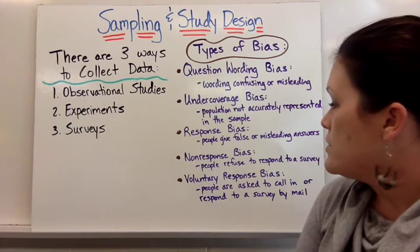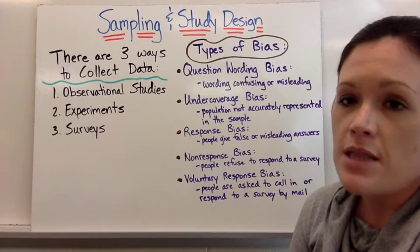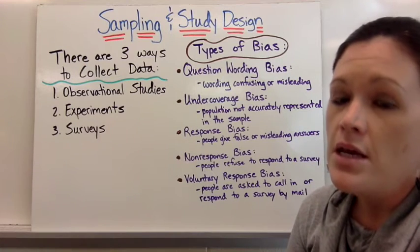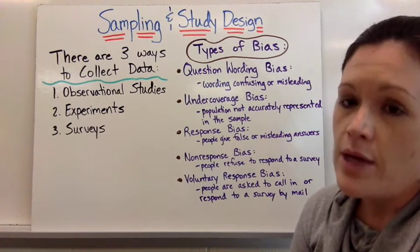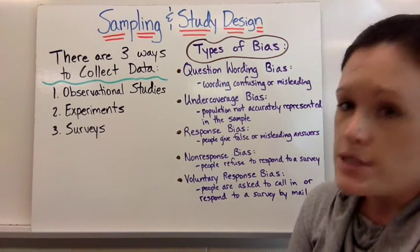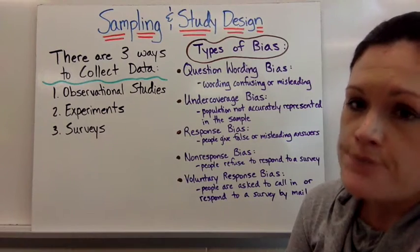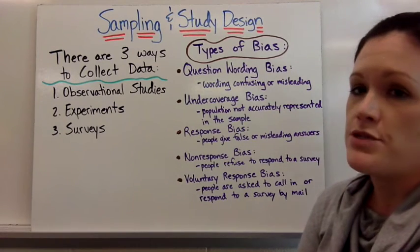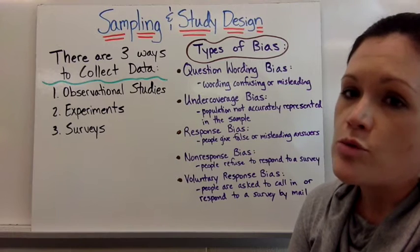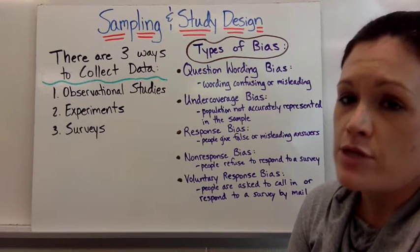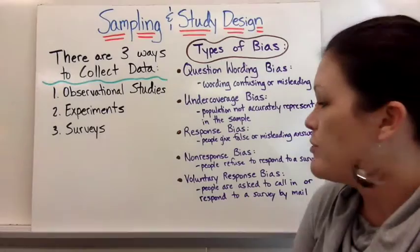Non-response bias occurs when people just refuse to respond to a survey. This happens a lot when you're asked to do something inconvenient, like mail it back to them. Most people don't want to put a stamp on something and mail it back, so they throw the surveys in the trash. You only get responses from people who are more responsible or have more time in their day, so you don't get an accurate response.